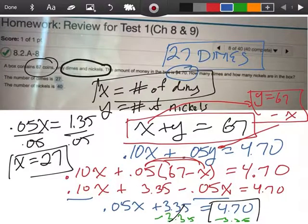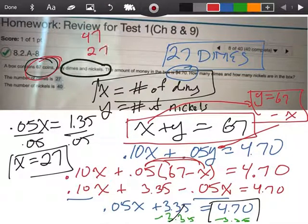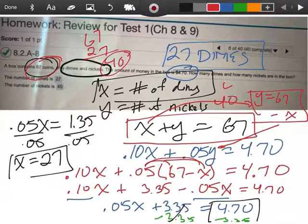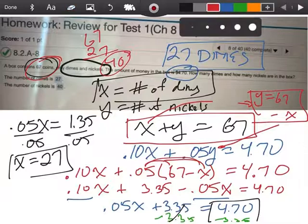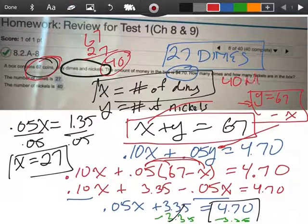Now remember how many coins we had in total? We had a total of 67, right? So if I say, well, what's 67 minus 27? That should give me 40. And so that would be, I know I'm getting a little messy here, guys. Sorry about that. I would have 40 nickels.